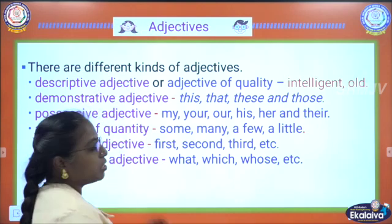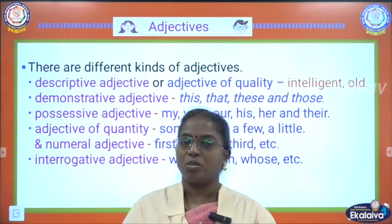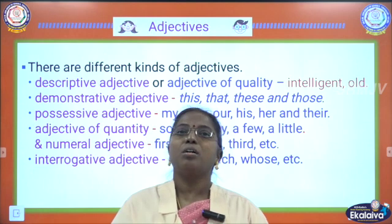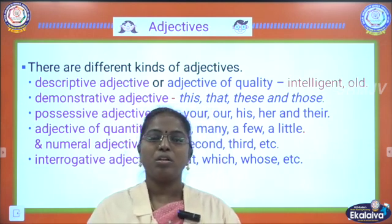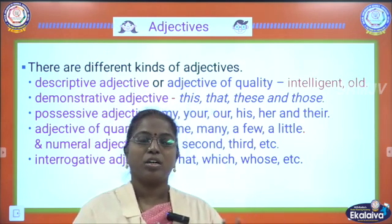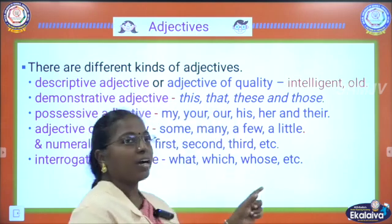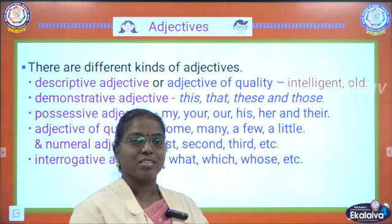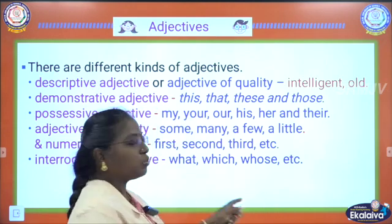Then interrogative adjective. What do you mean by interrogative adjective? When we ask a question before a noun — for example, whose book? If you ask whose book, book is a noun and before the noun you are asking whose — that word is interrogative adjective. Whose book is that? Whose pen is that? Whose pencil is this? When you ask questions before a noun, that is called interrogative adjective.